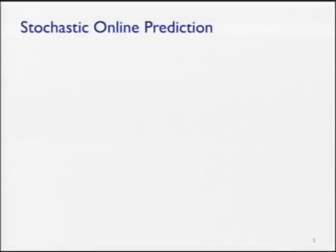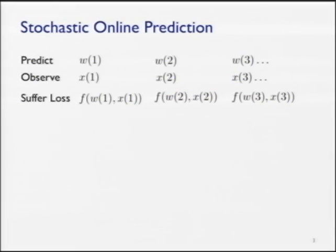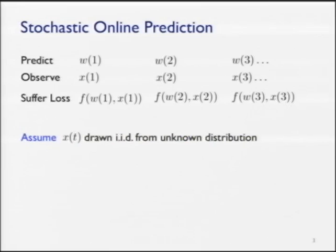Let me start by describing the stochastic online prediction problem. We're going to make some prediction W at time one, receive some observation — a random sample from the world — and suffer some loss, which is a function of both the prediction we made and the observation. We can then refine our prediction, make a new observation, suffer a new loss, and this repeats. Performance is measured in terms of regret.